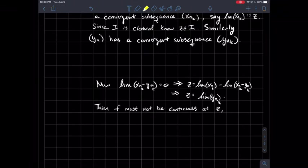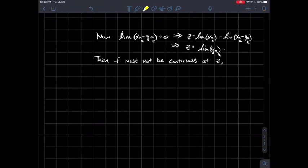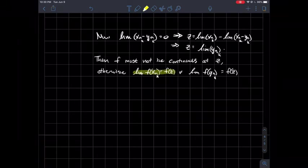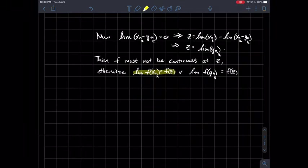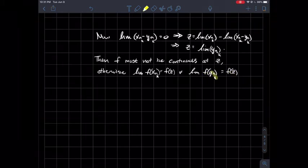What I claim is that f is not continuous at this point z. Let's talk about why. What if it was? Otherwise, what if it was? Well, by continuity, the limit of the outputs of the sequence should be the output at the limit. Since x_{n_k} converges to z, therefore f(x_{n_k}) should converge to f(z). And similarly, f(y_{n_k}) should also be f(z), since y_{n_k}, the inputs, converge to z.